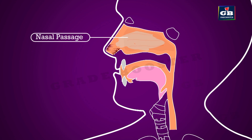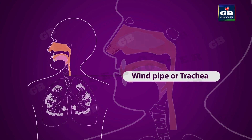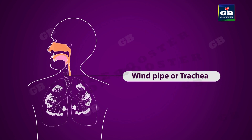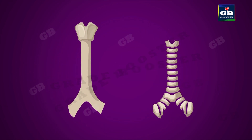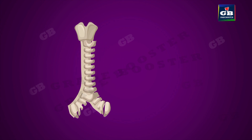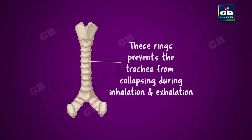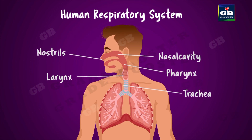This moist air then enters the windpipe, also called the trachea. The trachea is supported by C-shaped cartilaginous rings. These rings support the trachea and help keep it open all the time.